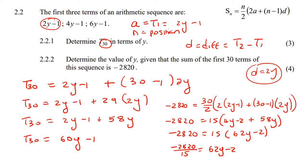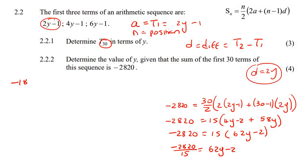And so we should end up with minus 188 equals to 62y minus 2. And so 62y would then be equal to minus 186. And so if you then have to go and divide 186 by 62, you end up with y equals negative 3.